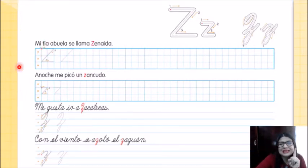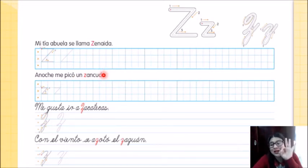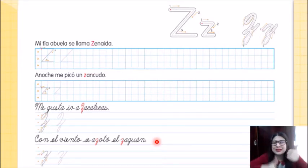¿Estamos listos? Vamos con la primer frase que dice así. Mi tía abuela se llama Zenaida. ¡Fantástico! Segunda frase, anoche me picó un zancudo. ¿Cómo? Muy bien, vamos con la tercera frase. Me gusta ir a Zacatecas. ¿Cómo dice? ¡Fantástico! Y vamos con la última frase, la cuarta. Dice así. Con el viento se azotó el zaguán. ¿Cómo dice? ¡Muy bien, chicos! Deditos arriba para todos ustedes.